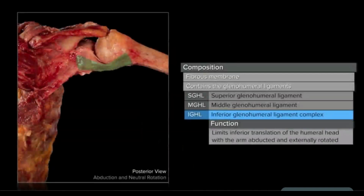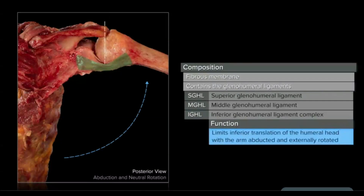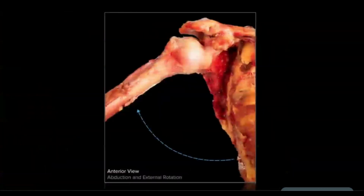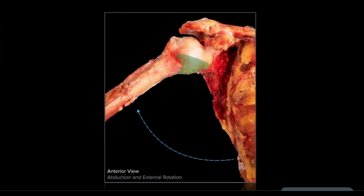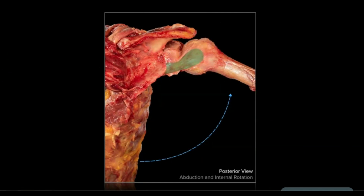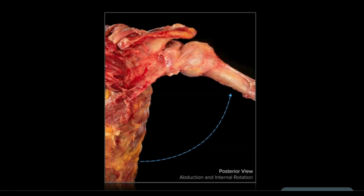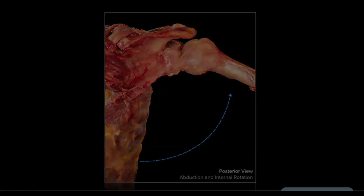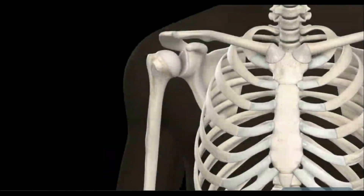The IGHL complex acts to limit inferior translation when the arm is abducted. When the arm is externally rotated, the anterior band shifts to cover the anterior aspect of the humeral head and limit anterior translation. When the arm is internally rotated, the posterior band shifts to cover the posterior aspect and limits posterior translation.